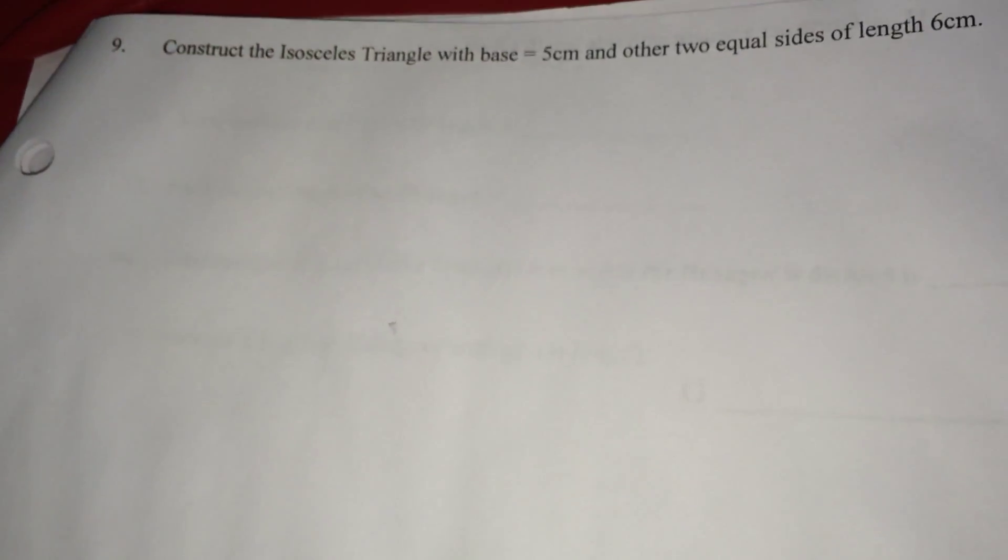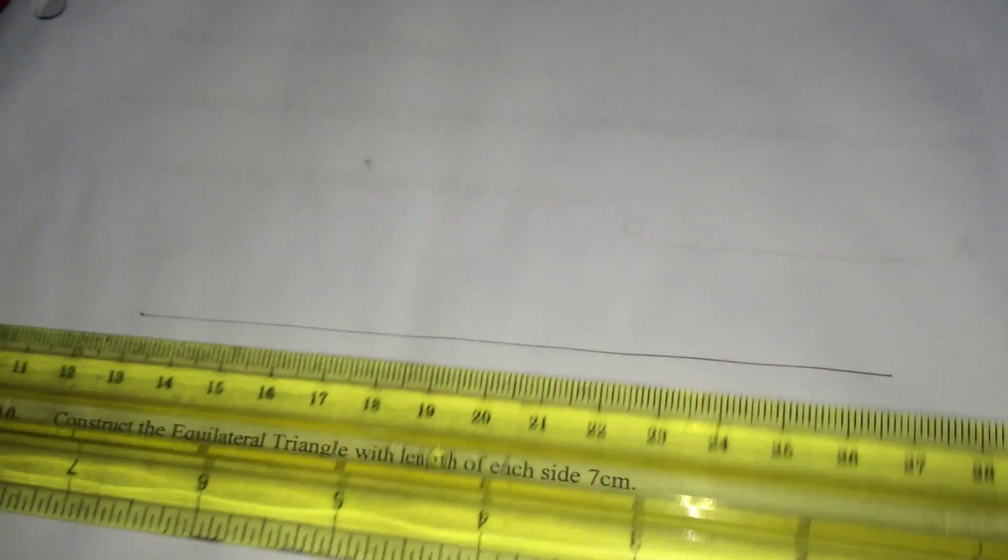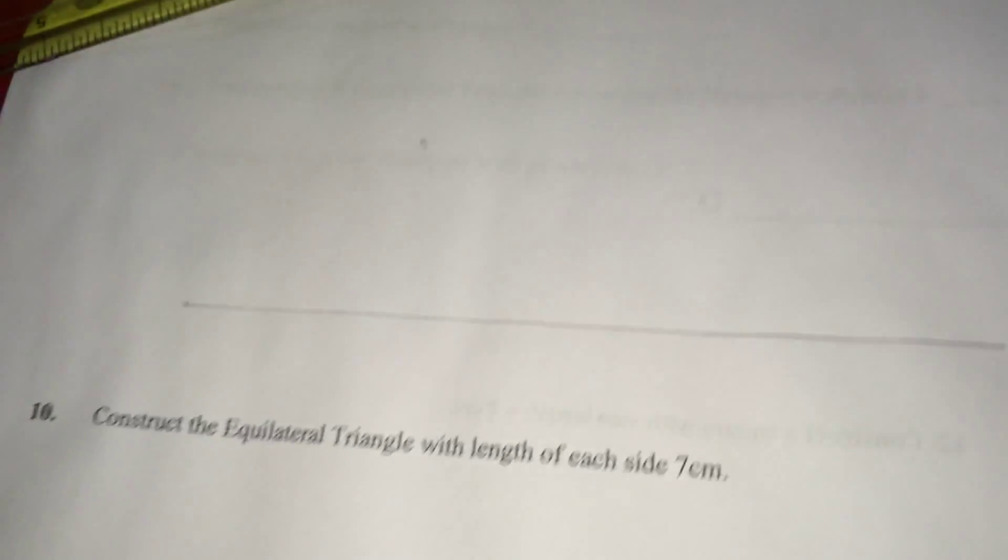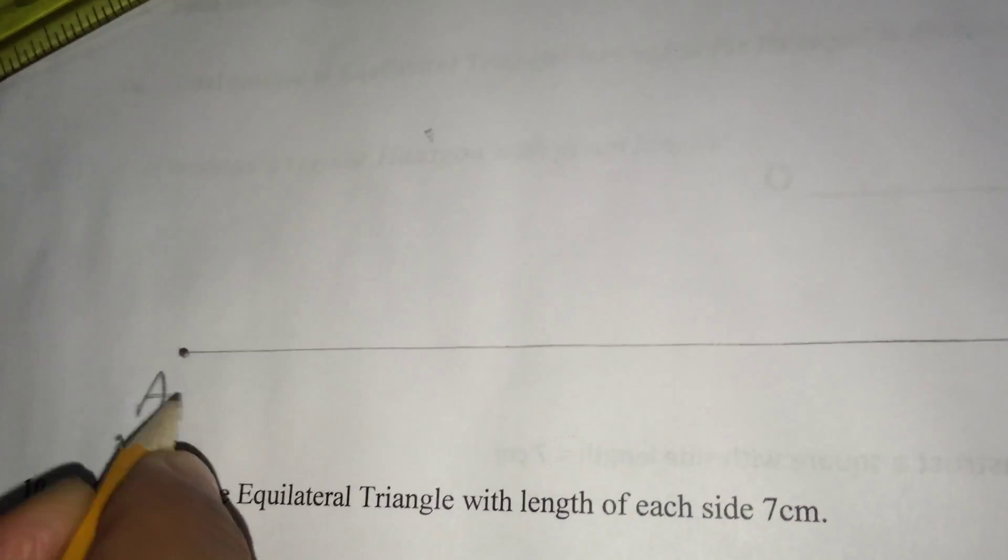First, I am drawing a line segment of any length, like this. I have drawn a line segment. I am locating here this point as A.